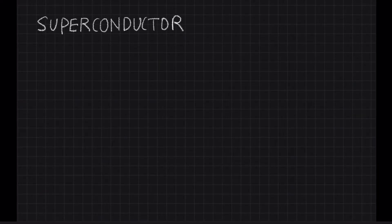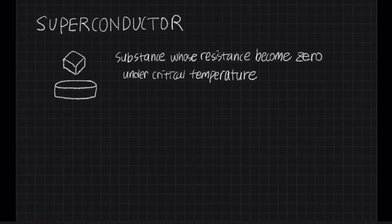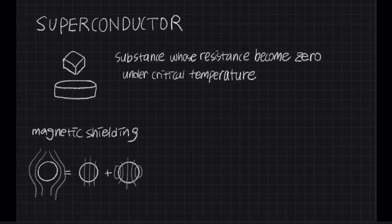First, superconductor. A superconductor is a substance whose resistance becomes zero under critical temperature. Superconductors have several properties. Magnetic shielding: superconductors produce an electric current to offset the external magnetic field and make the internal magnetic flux density zero.